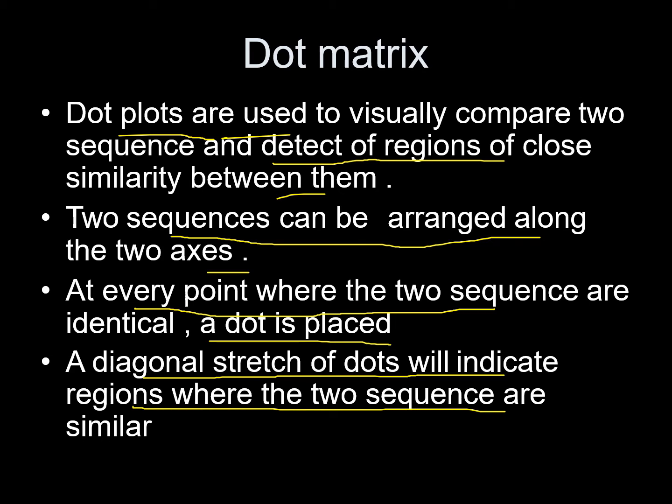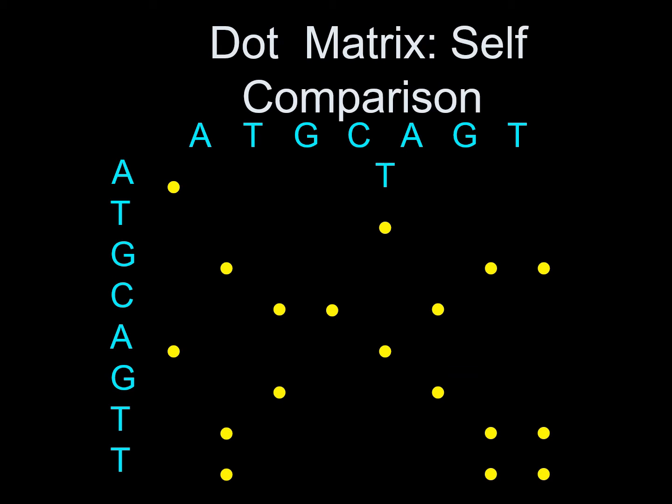A diagonal stretch of dots will indicate regions where the two sequences are similar. A lot of dots that are formed diagonally will show that the two sequences are very much similar.